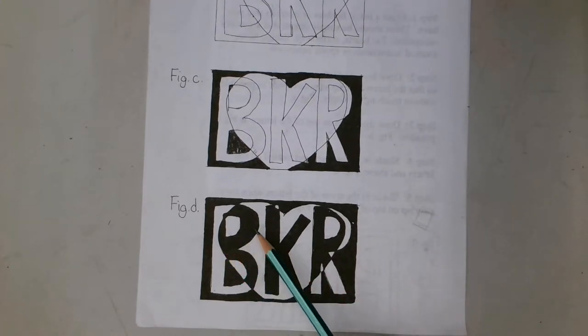The last step is to go in, and everywhere that the letters overlap the symbol, you're going to color those in. You can see these parts of the letter B have been colored in because they're on top of the heart. And this part of the letter B is colored in because it's part of the background.